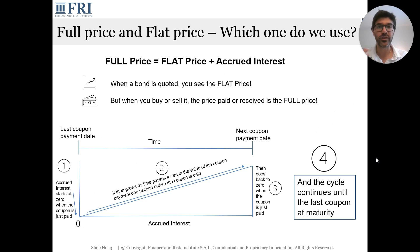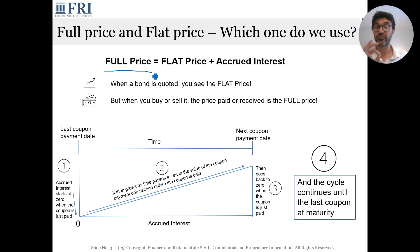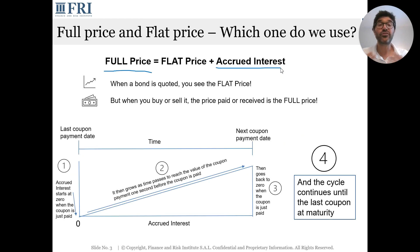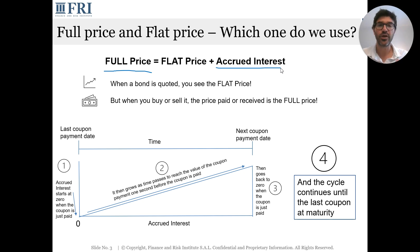To reinforce: anytime we discount all the future cash flows on a bond, we are calculating the full price — no hesitation. The full price includes accrued interest because we are discounting the full $50 coupon without asking what portion belongs to the current holder versus any prior holder who sold the bond during the year. We are looking at the full cash flow without distinction as to who is entitled to which portion.